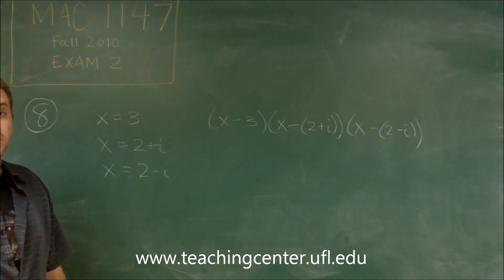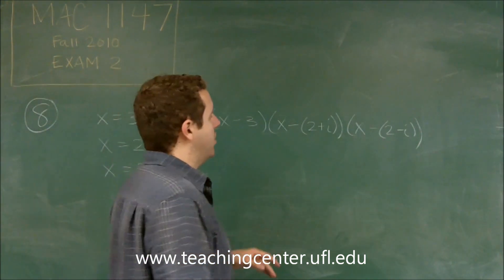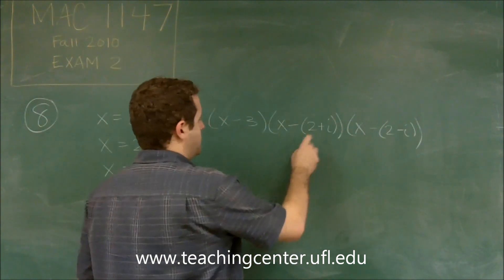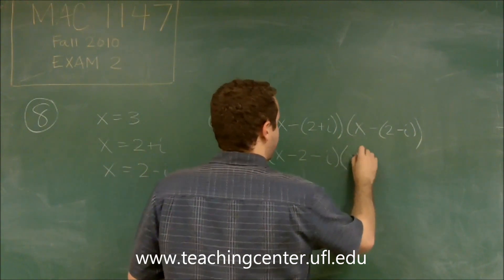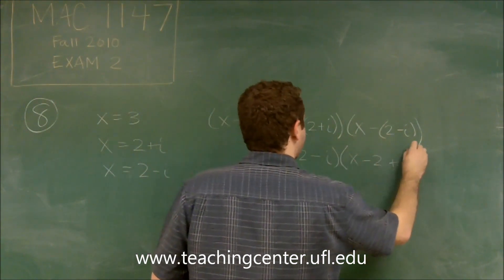Now, that looks like it could be a little tough. One thing you can always do to make these a little bit easier is if you distribute this negative here, minus i, x minus two plus i.